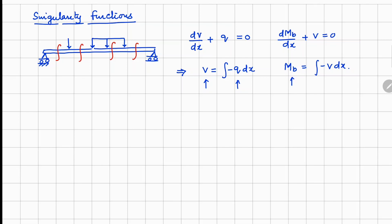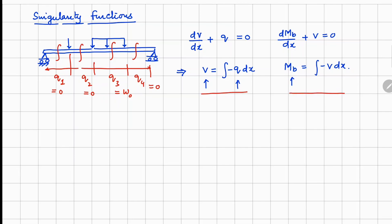The problem arises when we look at discontinuities in the beam. For example, up to one section we may have q1, then q2, q3, and q4. For this problem q1 is 0, q2 is 0, q3 is a constant w0, and q4 is 0. So we still have to do the problem four times and integrate to get the answers.